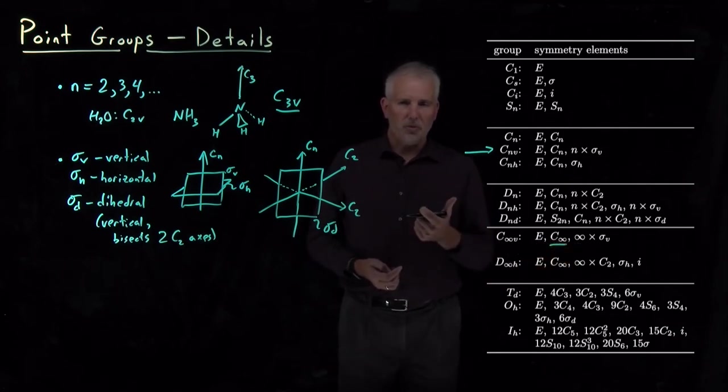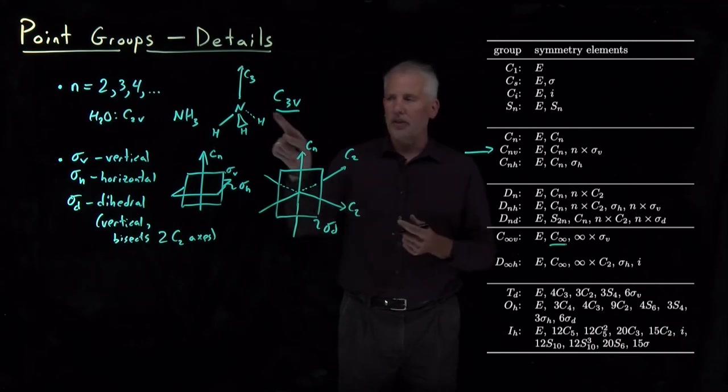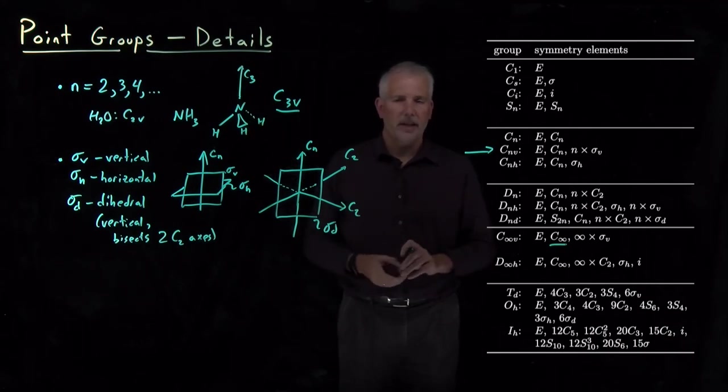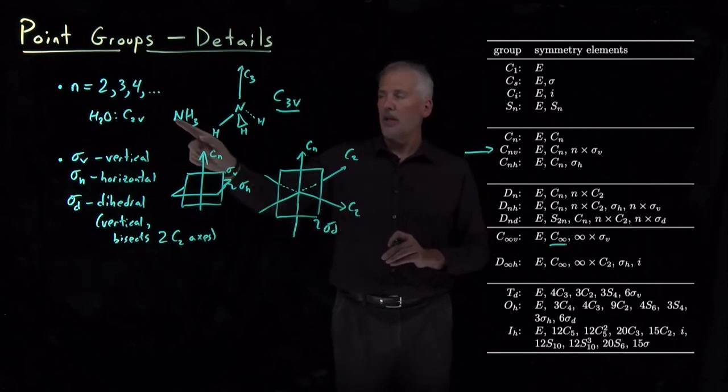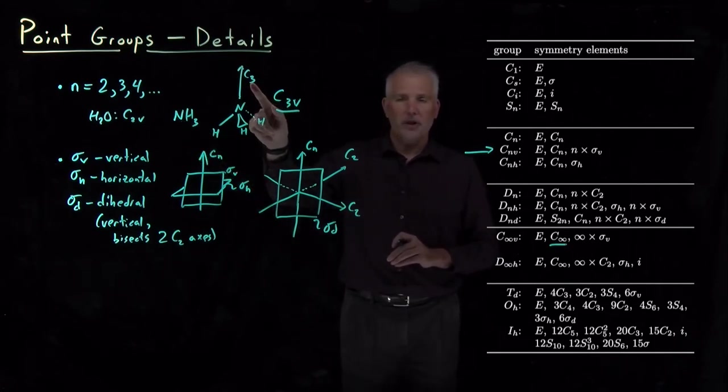We understand what a C2 rotational axis is, what a C3 rotational axis is, what's a C infinity rotational axis. It's really just the same thing, just in the limit of very large values for the subscript.